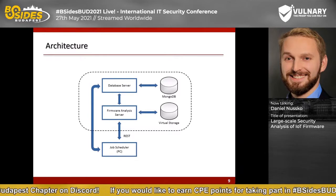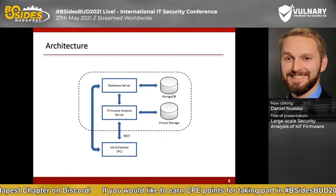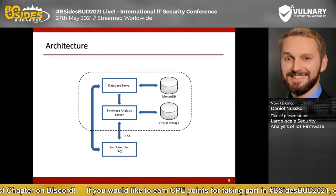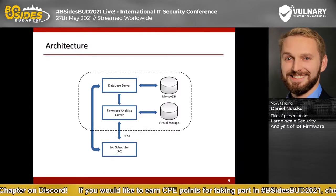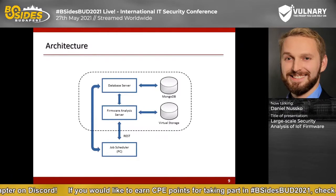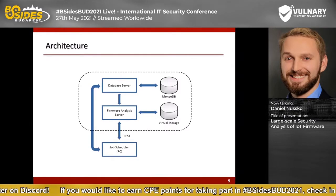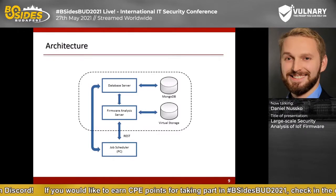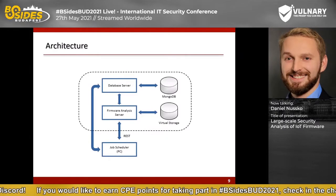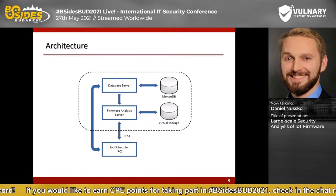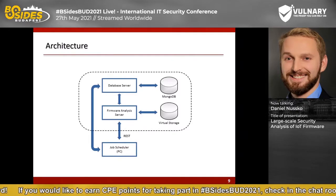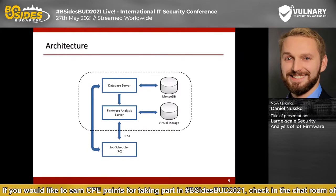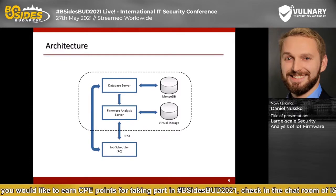Let's take a look at the architecture of my analysis environment. During my first tests it became clear that the analyzers have high system requirements — a large number of files are examined in parallel and the analyzer scales with available CPU cores and system memory. This was why I decided to run the analyzers in a cloud environment. The analyzers were implemented in Python using the FACT framework, which is built modularly, making it easy to create custom modules.